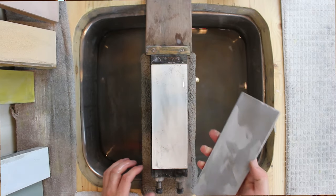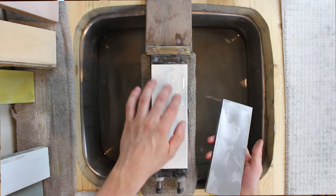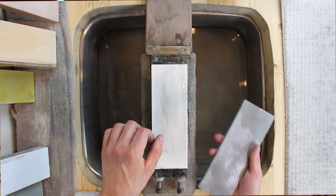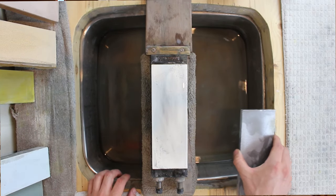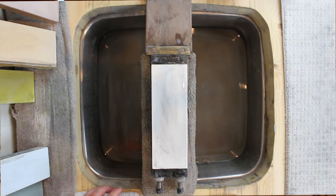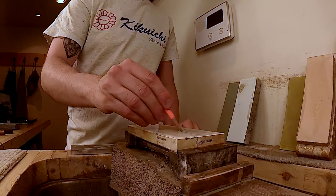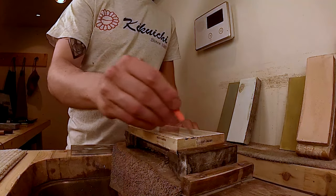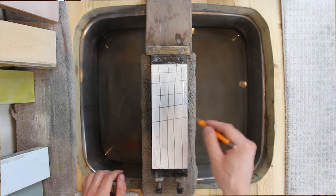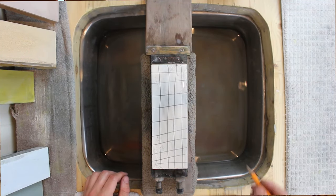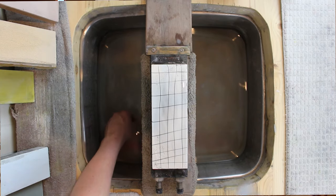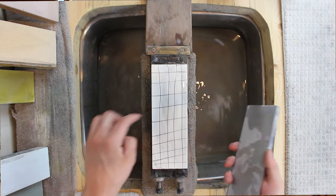Now a couple of tricks that you can use to determine whether or not your stone is flat: you can draw a grid using a pencil on your stone, just like so, where we're removing material from our stone.